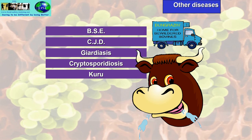Kuru occurs when people eat other people. There was a case in 1964 in New Guinea where, as part of a ritual, instead of burying their dead they would eat them — especially the brain — believing the person's soul would survive. However, this practice introduced the Kuru disease, which, like CJD, affects the brain and causes untold damage and eventually death.